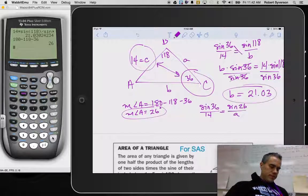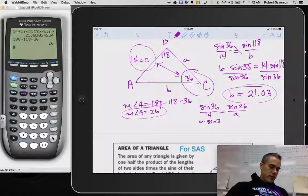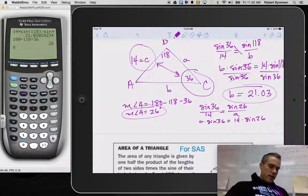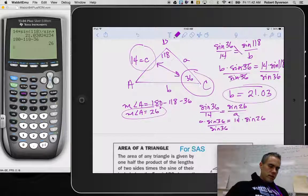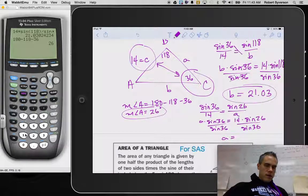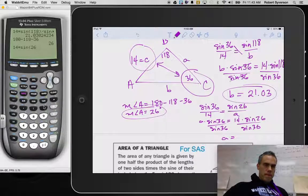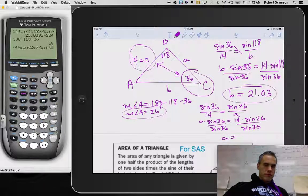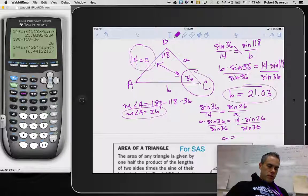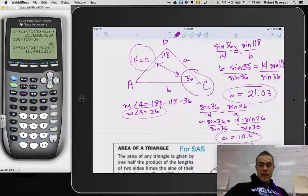And again, we cross multiply. So I have a times the sine of 36 is equal to 14 times the sine of 26. And divide by the sine of 36. And we are left with a is equal to, let's plug it in our calculator. So I've got 14 times the sine of 26 divided by the sine of 36. Enter. We get a being equal to 10.4 approximately. And there we are. We've solved for all of our missing sides and angles of this non-right triangle using the law of sines.